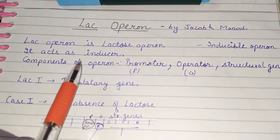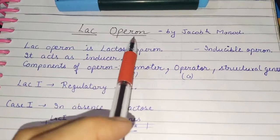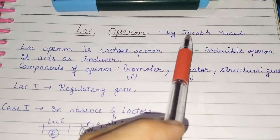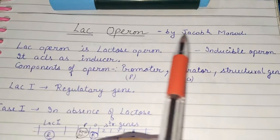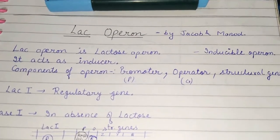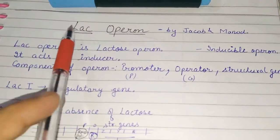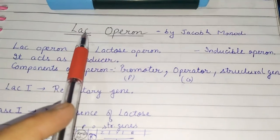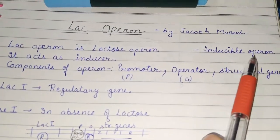In this video lecture, I am going to tell about lac operon. Lac operon means lactose operon. It was given by Jacob and Monod. It is an inducible operon. Inducible operon means it activates when the lactose is present. In the presence of lactose, it acts as activator. So, it is inducible operon.